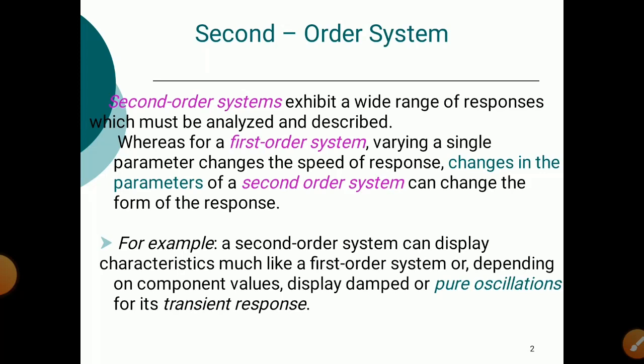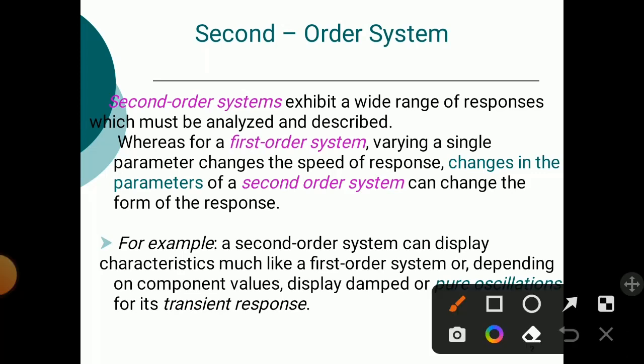In short, in a second order system the output or whatever the response is varies continuously. It may be in the form of pure oscillations or it may be with some damping. That response is called a transient response because the response varies continuously with respect to time. That's why a second order system has a wide range of responses. These responses must be analyzed and described.